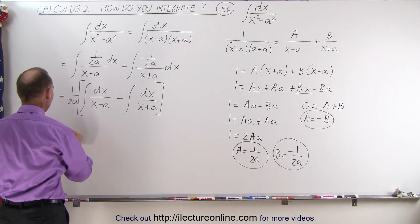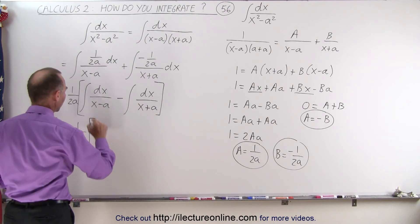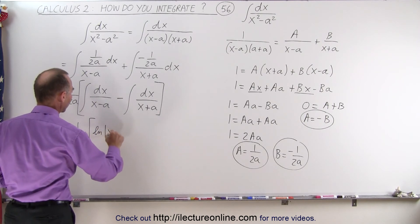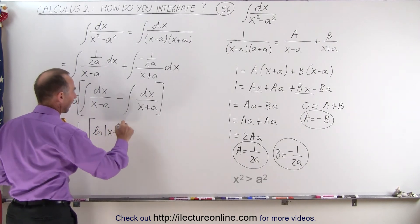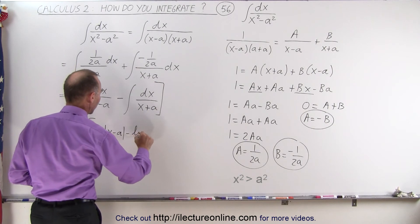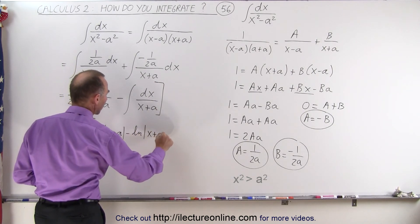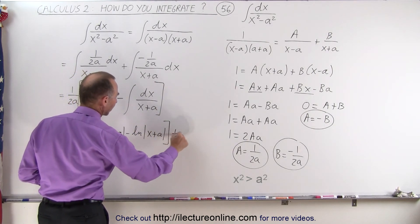This is 1 over 2a times. Here, this becomes the natural log of x minus a. And that becomes minus the natural log of x plus a. And we have a constant of integration.